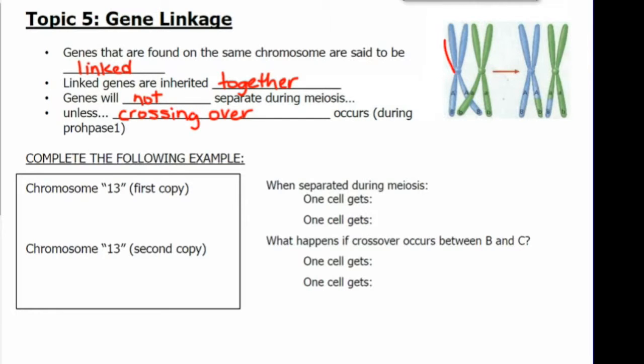The genes on this chromosome will travel together to the same gamete. So genes A and B will be found in one gamete unless crossing over occurs, which is the case in these two chromatids.